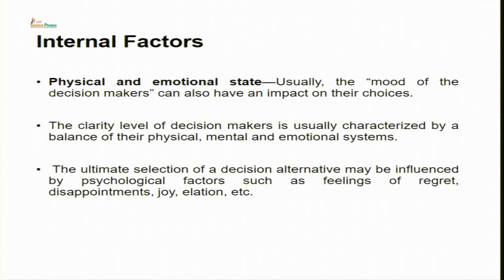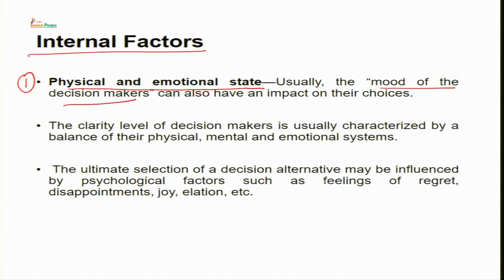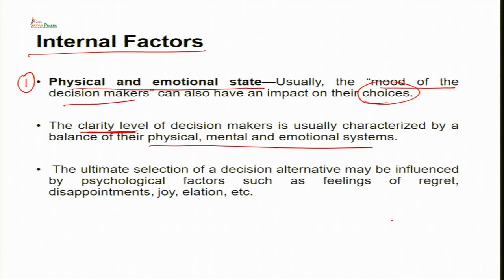Moving on to internal factors affecting decision making. The first is the physical and emotional state of the manager. The mood of decision makers can have an impact on their choices. Clarity in decision making is characterized by a balance of physical, mental and emotional systems — these are very sensitive and critical factors. Unless the manager is in the right state of mind, they cannot take appropriate or accurate decisions. The ultimate selection of a decision alternative may be influenced by psychological factors such as feelings of regret, disappointment, excitement or elation.